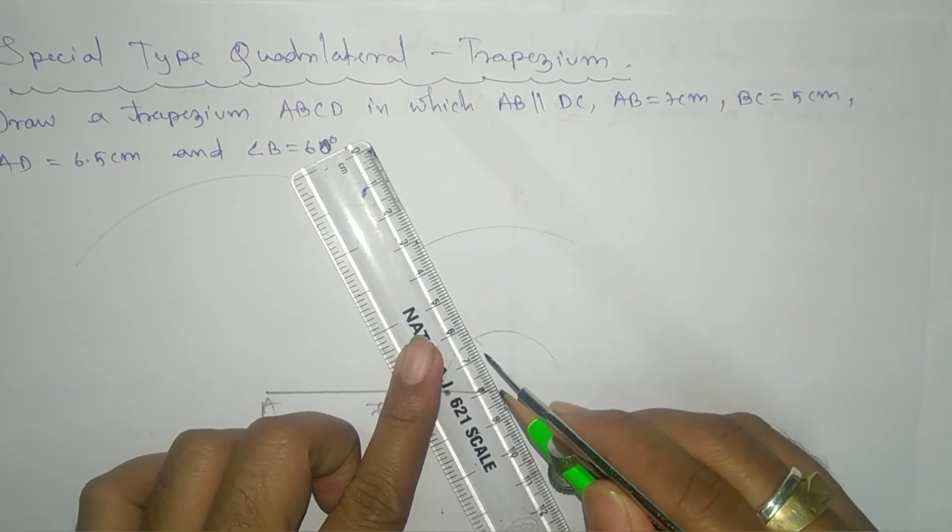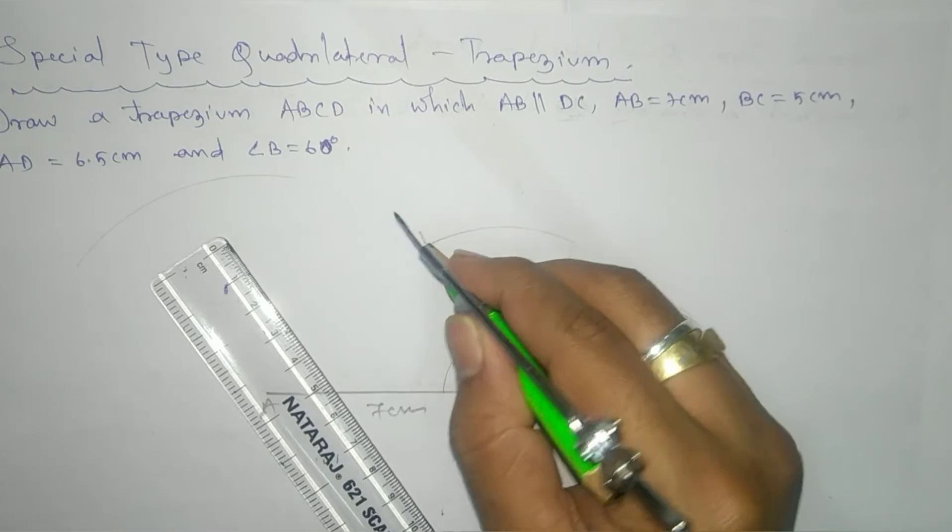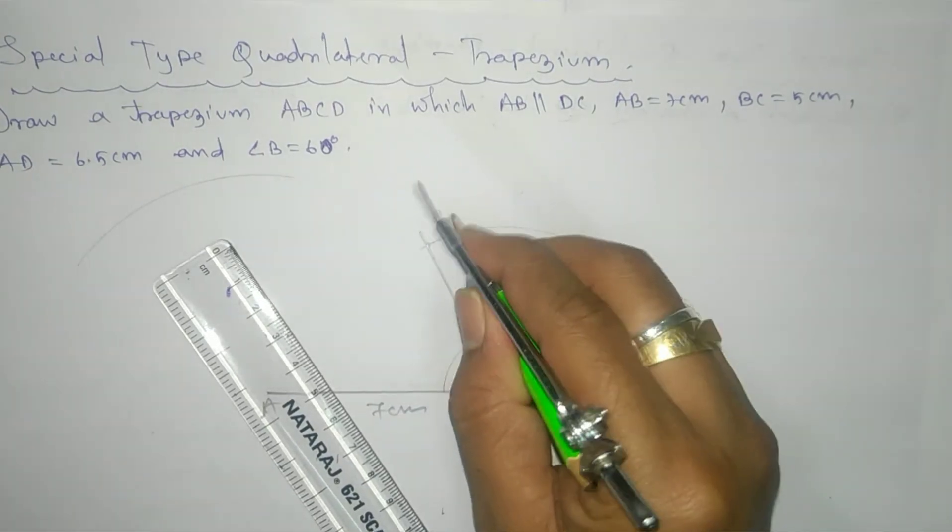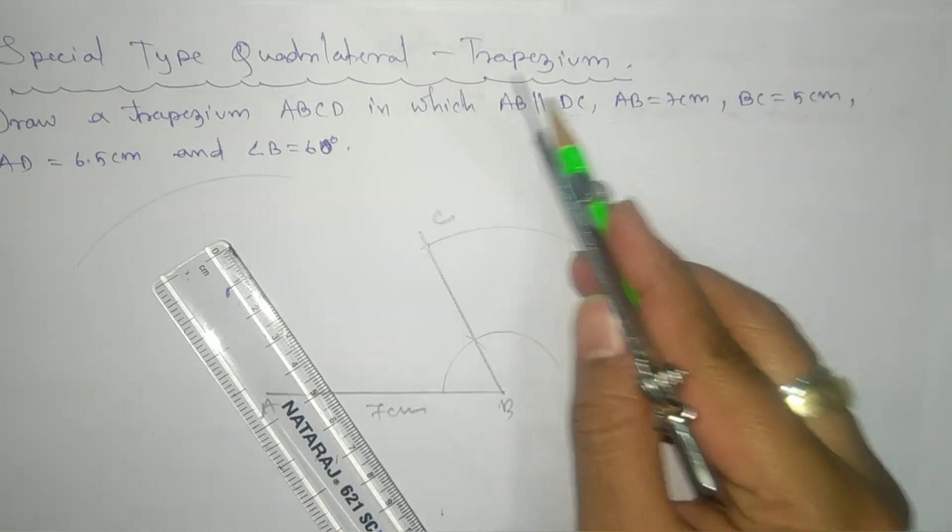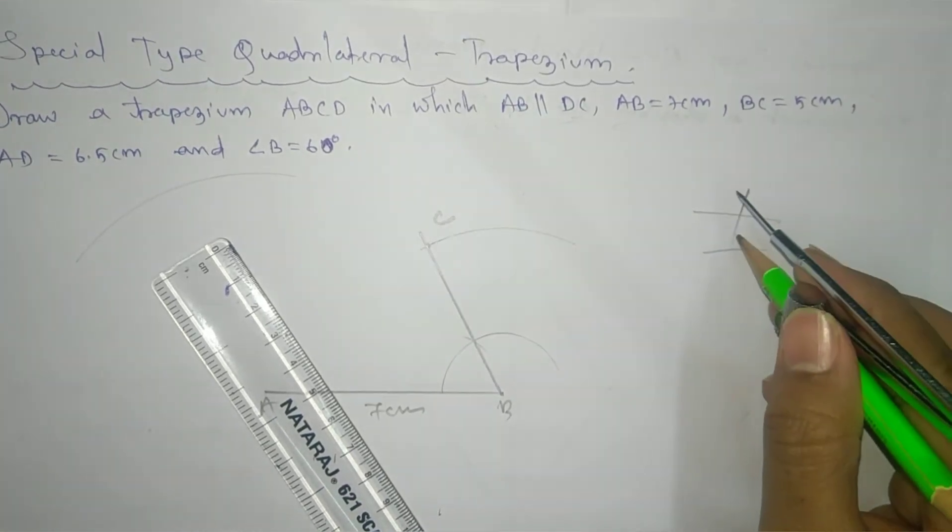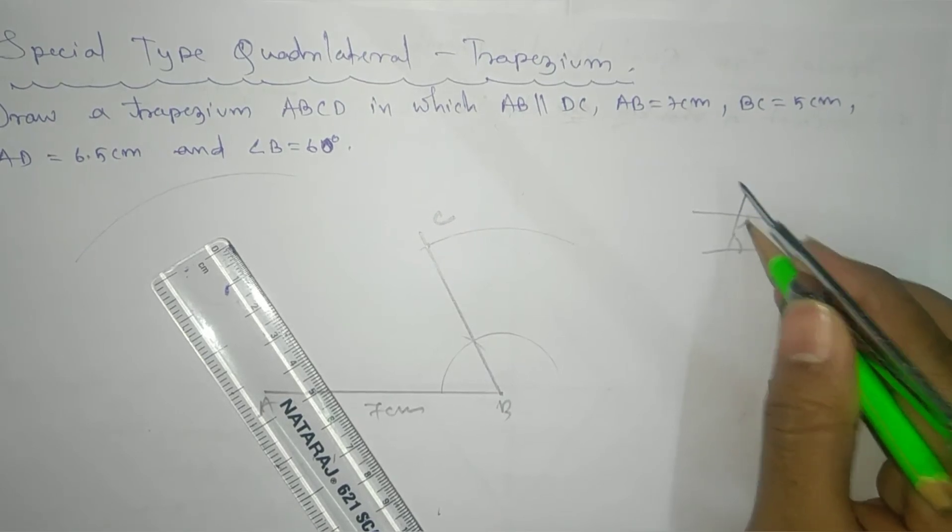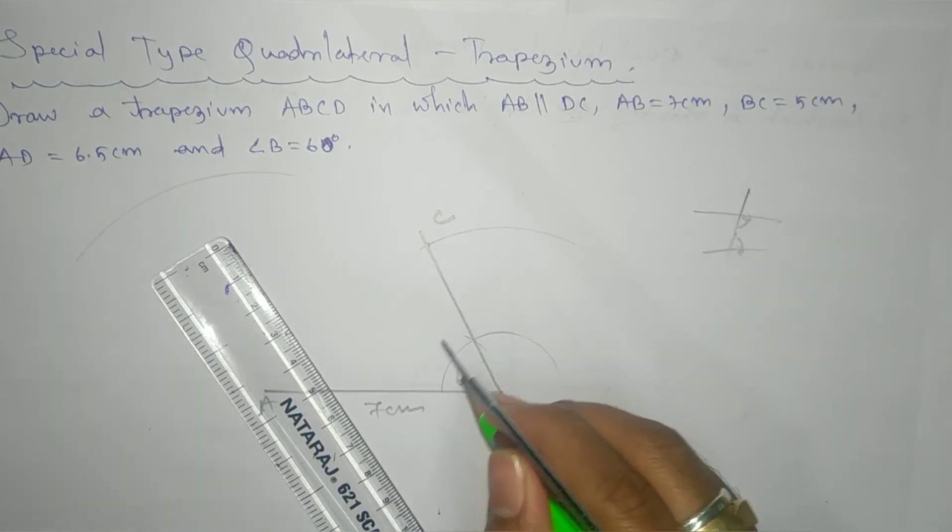Join it from this point, so whatever intersecting point we'll get, that is your C. Now we know that AB is parallel to CD, and there's one relation that co-interior angle is supplementary. That means sum of these two angles must be 180 degrees. If it is 60 degrees,